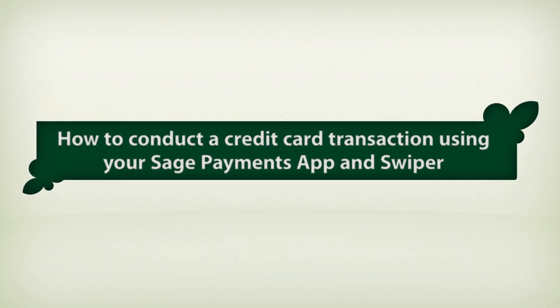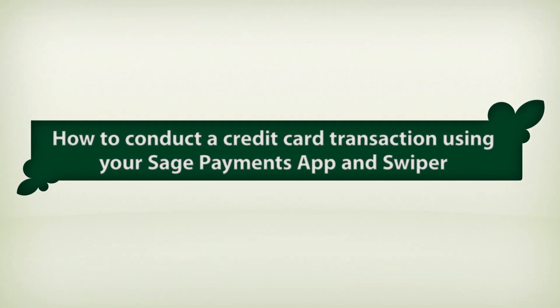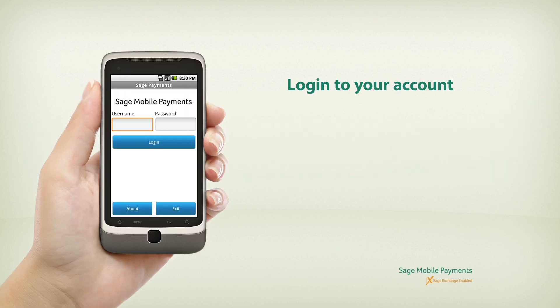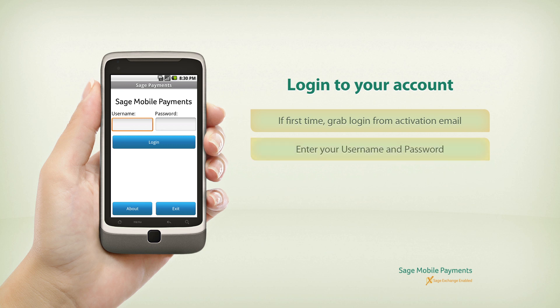How to Conduct a Credit Card Transaction Using your Sage Payments App and Swiper. Let's log into your app. If this is your first time, you'll need to grab your login info from the activation email. You'll enter your username followed by your password. Now you'll click Login to continue.